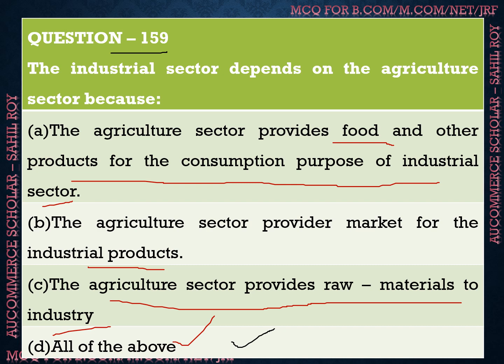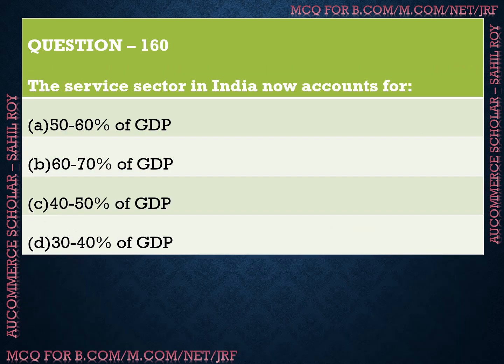Question number 160: The service sector in India now accounts for what percentage of GDP? We have four options: Option A is 50 to 60% of GDP, Option B is 60 to 70% of GDP, Option C is 40 to 50% of GDP, and Option D is 30 to 40% of GDP. The correct answer is Option A — 50 to 60% of GDP. The service sector, also called the tertiary sector, contributes 50 to 60% of India's GDP.